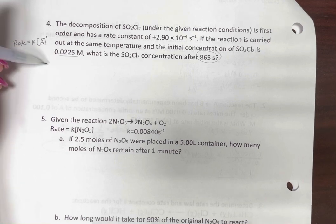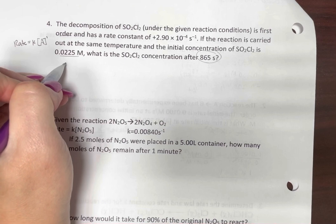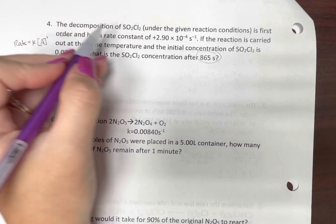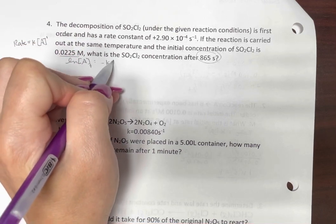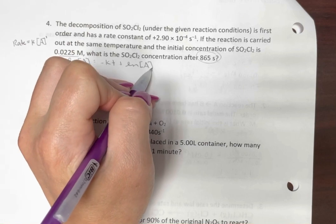So what we need to do is we need to use an integrated rate law, which don't memorize these, I will give them. You'll have to recognize the first order integrated rate law, but it says ln concentration of a sub t equals negative Kt plus natural log of our initial concentration.